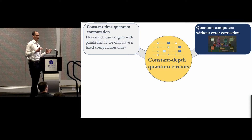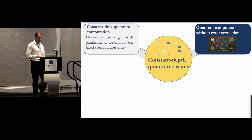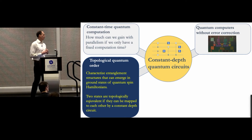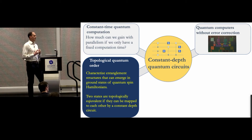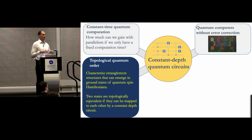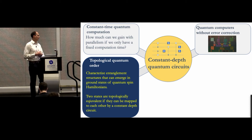Our qubits usually have only finite coherence time, and we have to finish computation before they decohere. Another motivation comes from physics: the theory of topological quantum order, where constant depth circuits are used to define equivalence classes of multi-qubit states. Two states are equivalent if they can be mapped to each other by a constant depth circuit, which is a fruitful way to think about entanglement structures in ground states of spin Hamiltonians.